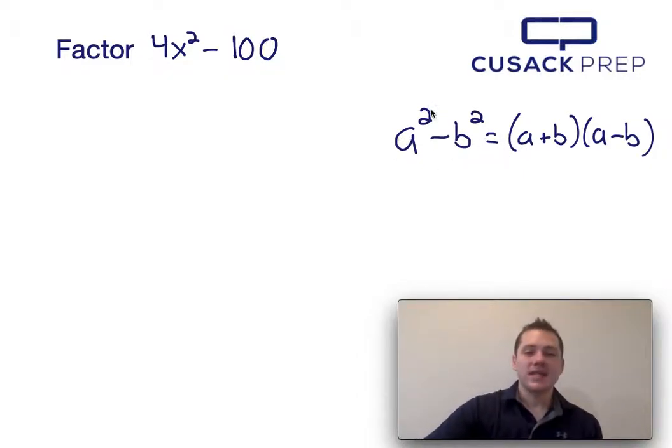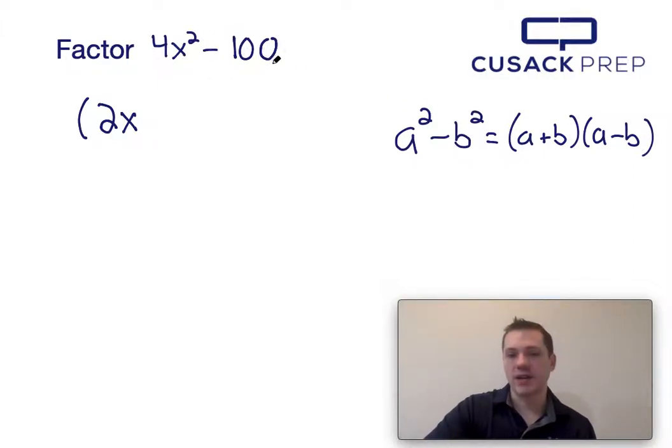Now if a² is in the same position as 4x², I can determine that a must be 2x, and I do that by taking the square root of 4x². If b² is in the same position as 100, I take the square root of both sides and I determine that b is 10. So this factors into (2x + 10)(2x - 10).